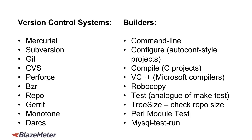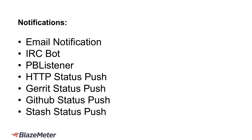As of July 2016, BuildBot supports the following tools out of the box. Version control systems include Mercurial, Git, CVS, Perforce, Repo, and more. Builders include command line, Configure, VC++, and TreeSize. Notifications include email notifications, IRC bot, PBListener, Gerrit status push, GitHub status push, Stash, and more.